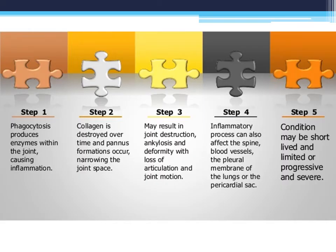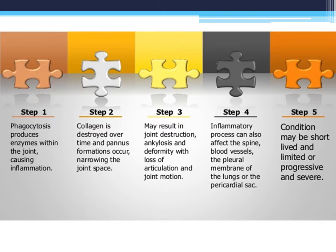There are five pathological steps in rheumatoid arthritis. First, phagocytosis occurs — cells start to kill bacteria to control infection, but this produces enzymes within the joint which cause inflammation. Second, collagen near the joints is destroyed and pannus formation occurs, narrowing the joint spaces. Third, the narrowed space may result in joint destruction and ankylosis, causing deformities where the articulation structure and joint motion become deformed.